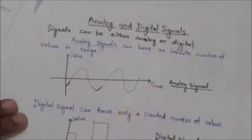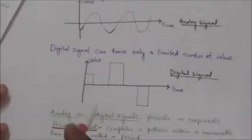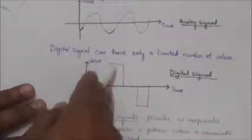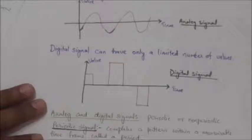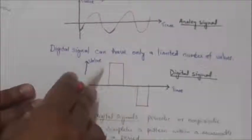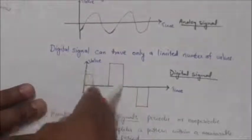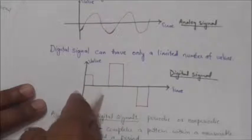Now we will study digital signals. A digital signal can have only a limited number of defined values. Here you can see the digital signal and the vertical lines of the digital signal.